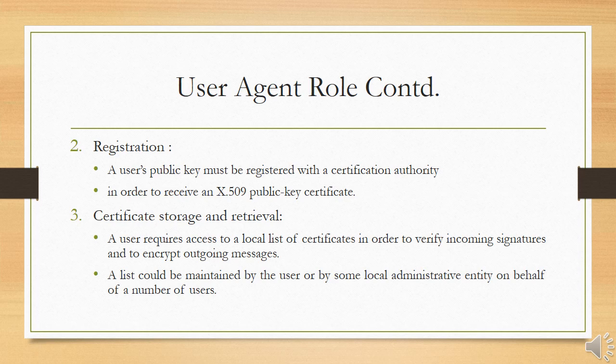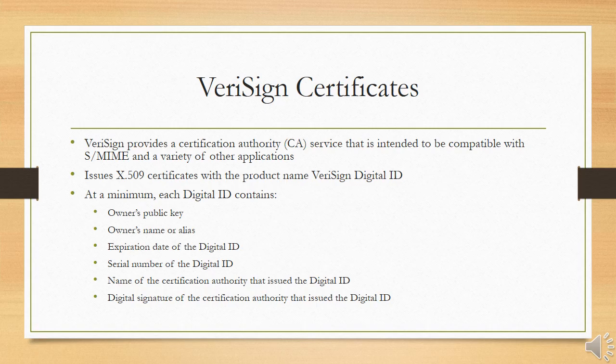Second, certification: a user's public key must be registered with a certification authority in order to receive an X.509 public key certificate. Third, certificate storage and retrieval: a user requires access to a local list of certificates in order to verify incoming signatures and to encrypt outgoing messages. Such a list could be maintained by the user or by some local administrative entity on behalf of a number of users.